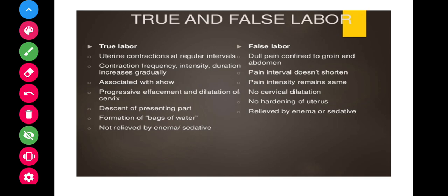Before labor, we need to find out whether it is true labor pain or false labor pain. Most women at nine months, if they have indigestion or slight abdominal pain, may mistake it for true labor pain. So we need to differentiate true labor from false labor. If they have indigestion or constipation, we need to identify whether those pains are true or false.